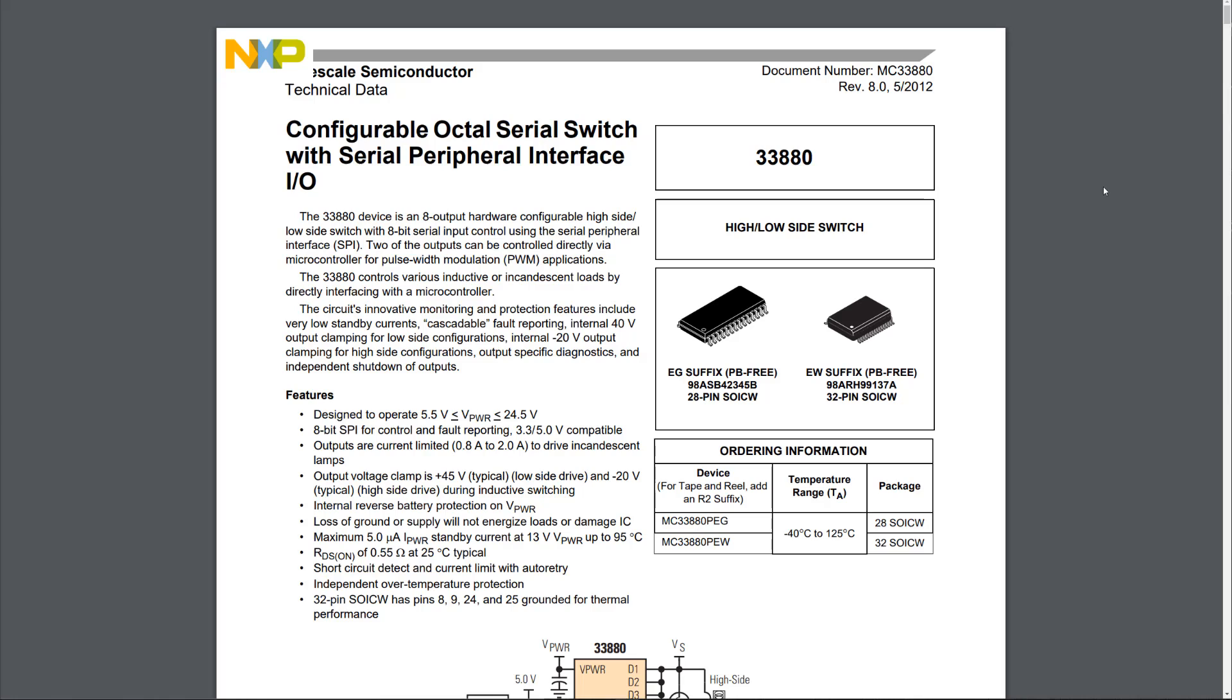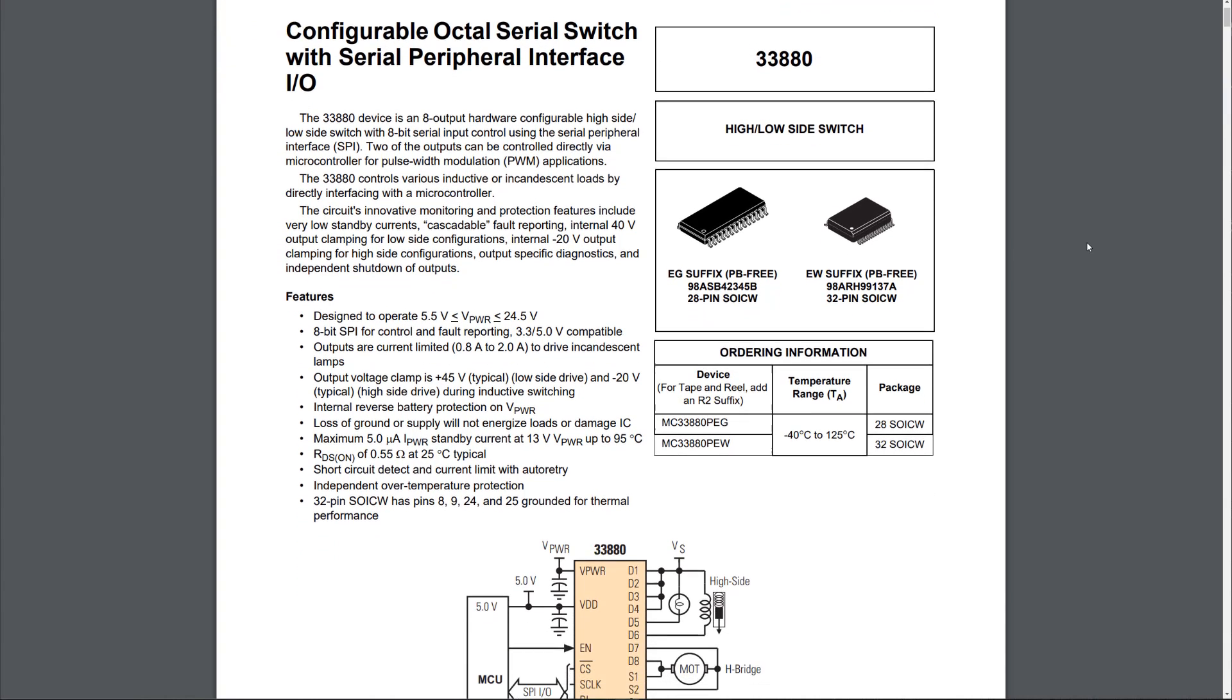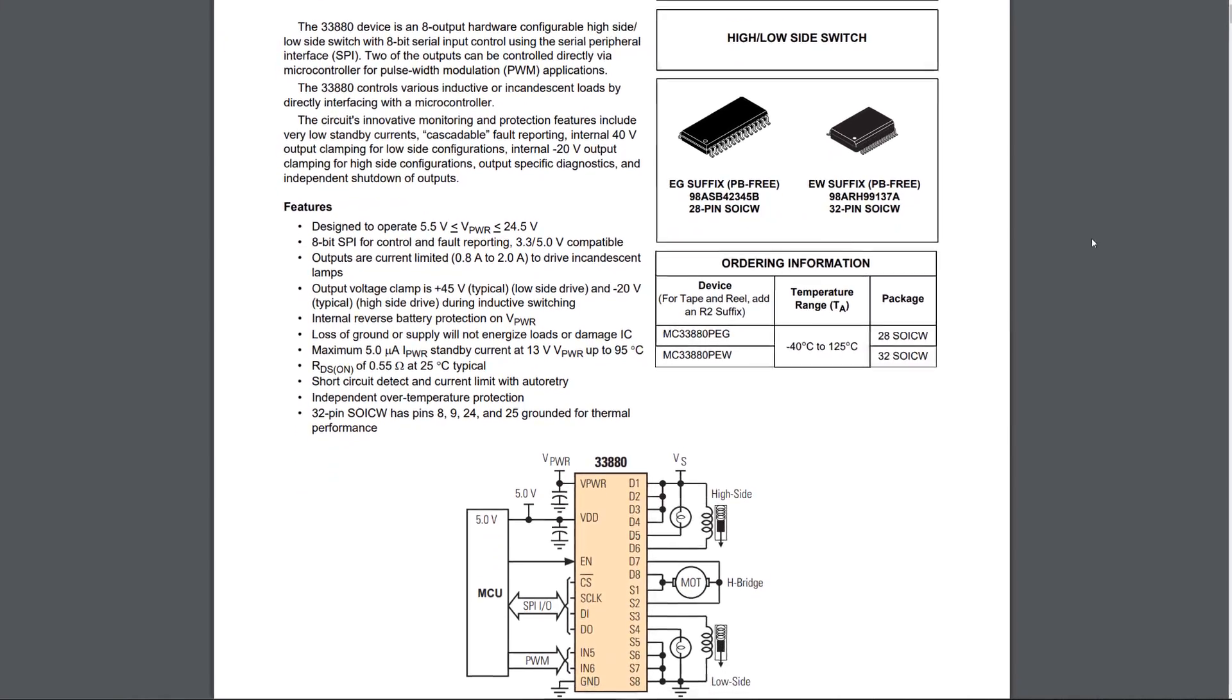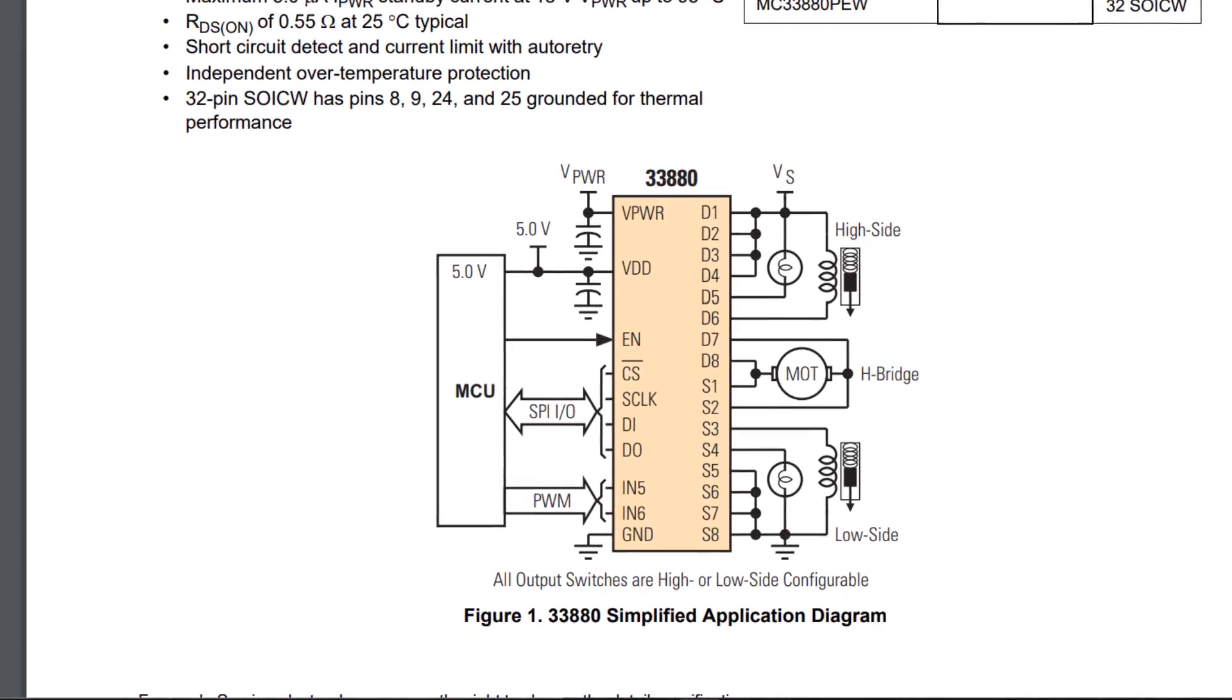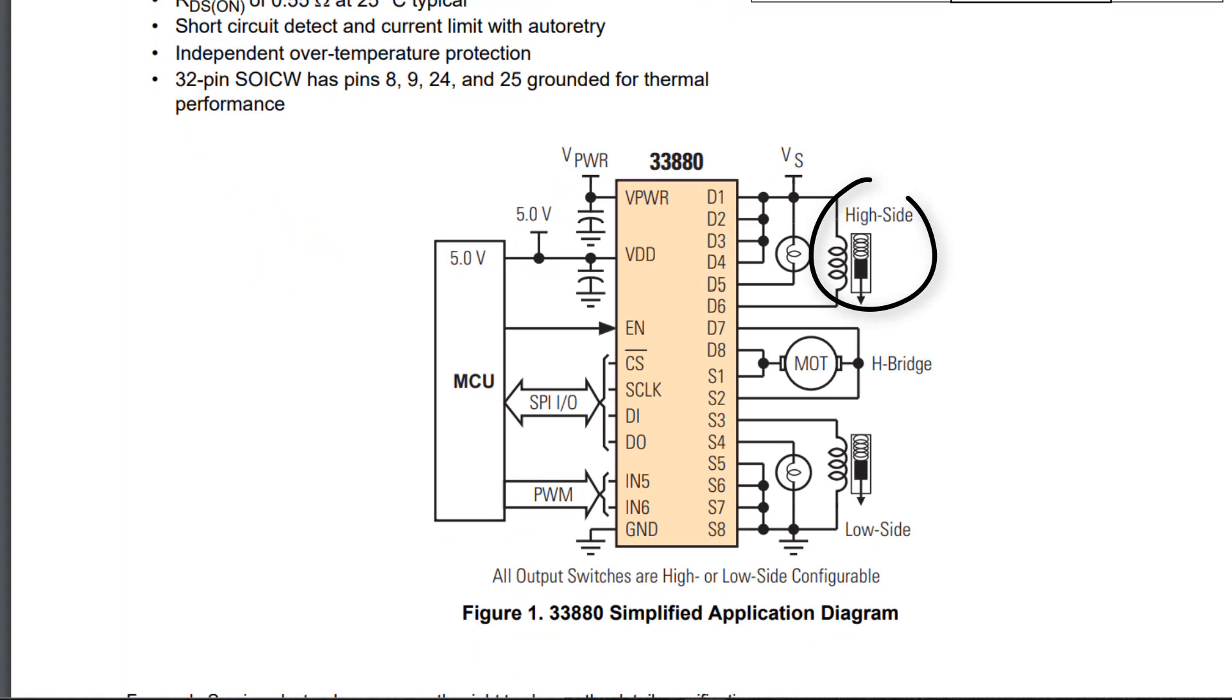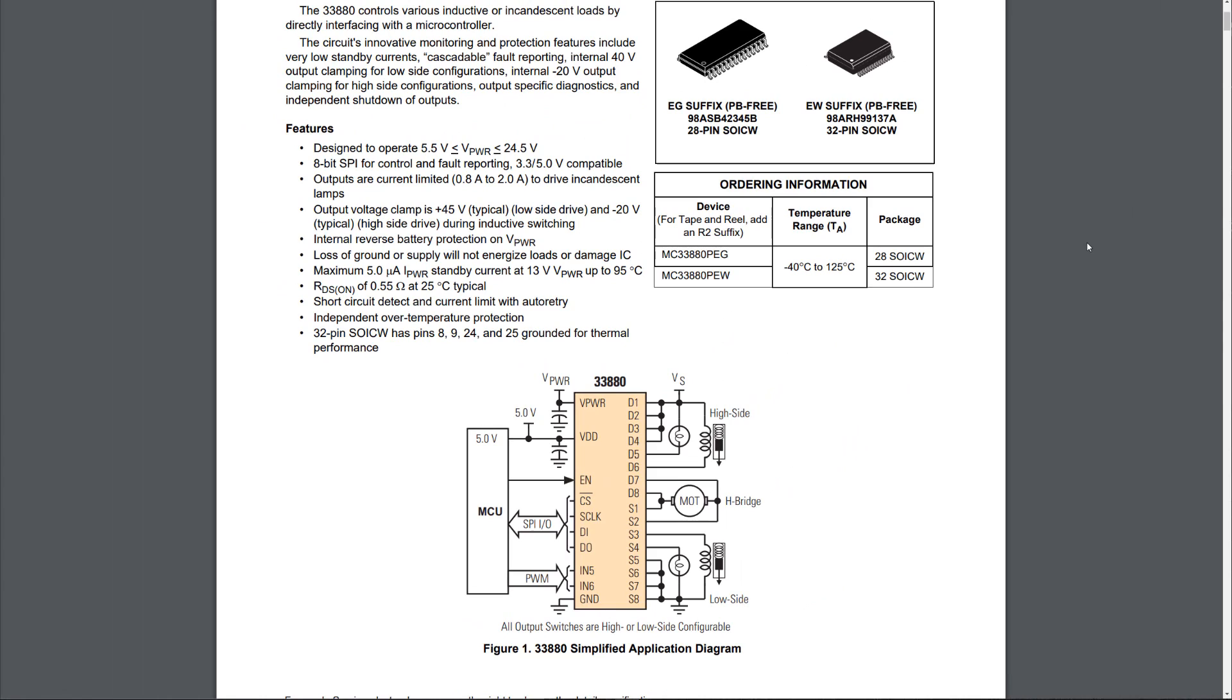For the display driver, I'll be using Freescale's MC33880 configurable octal serial switch that is controlled using SPI. It can be configured as a high-side switch, a low-side switch, or as an H-bridge, which is the configuration I'll be using in this project. I couldn't find any breakout boards for these 32-pin wide SOIC packages, so I'll be building my own.